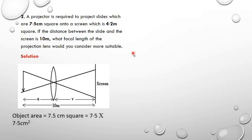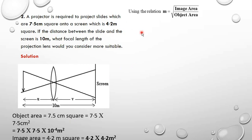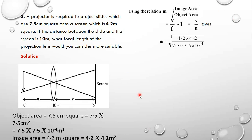The object area is 7.5 cm square, which is 7.5 × 7.5 cm², and if I change it to meters I multiply by 10⁻⁴. The image area is 4.2 meters square, so it's 4.2 × 4.2. From the formula, magnification = √(image area / object area) = V/F − 1 = V/U, and I get the magnification as 56.